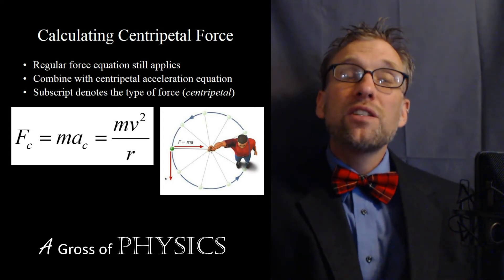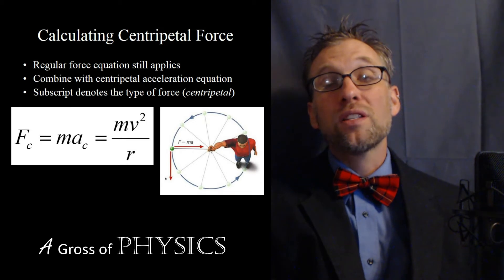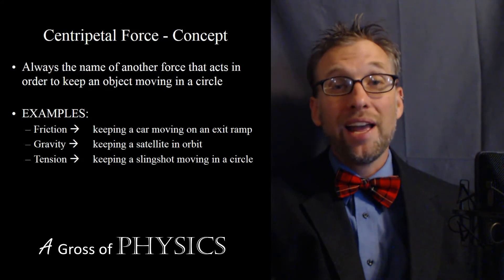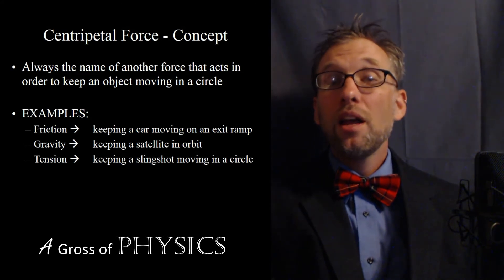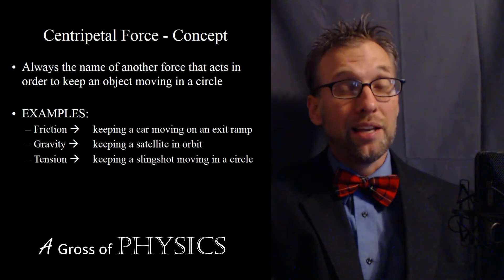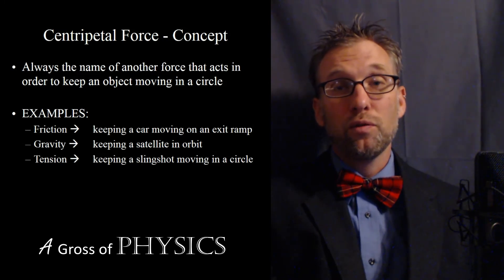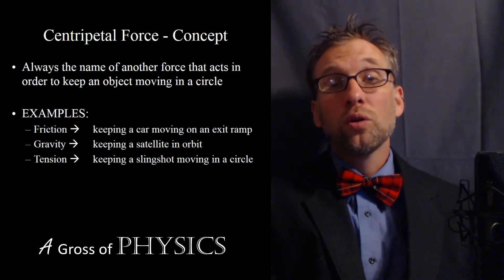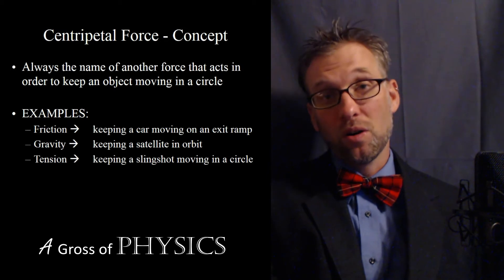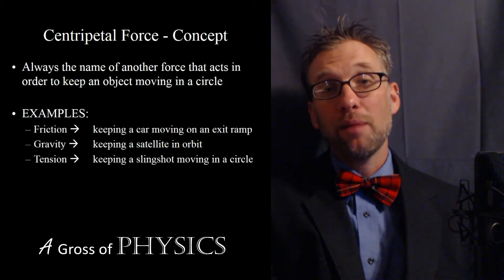Centripetal force is never seen by itself — it's always the force that keeps an object moving in a circular path. If an object is on a string being whirled, tension is the centripetal force. If the moon orbits Earth, gravity is the centripetal force. A car on a circular path uses friction, and a loop-de-loop uses normal force. The centripetal force is just the name of whatever force happens to be keeping the object in the circle.